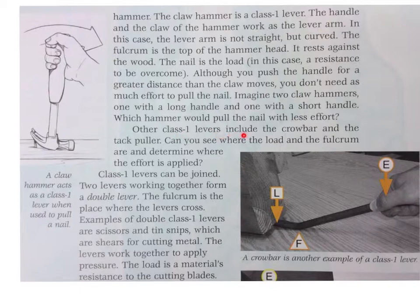Other class 1 levers include the crowbar and the tack puller. Can you see where the load and the fulcrum are and determine where the effort is applied?